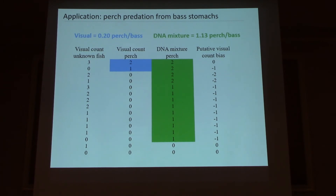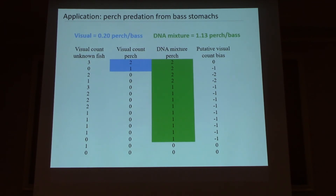So if we were to do the conventional visual estimate, the predation rate would be 0.2 perch per bass. We took those stomach contents, made a slurry, extracted DNA, and ran it through our yellow perch microsatellite panel using our DNA mixture estimator. We get 13 out of 15 stomachs actually showing yellow perch, many of them with multiple specimens not picked up at all by visual estimates. When we scale this up, we get almost a six-fold increase in estimated predation rate using genetics tools — which has been pretty exciting.